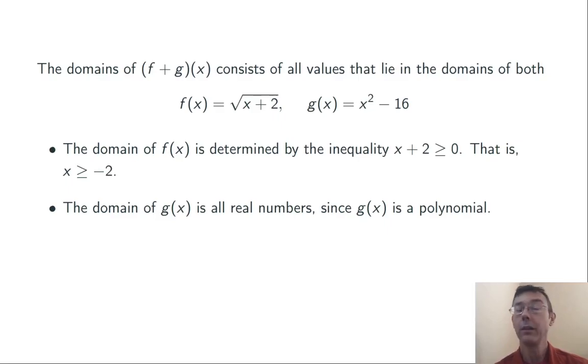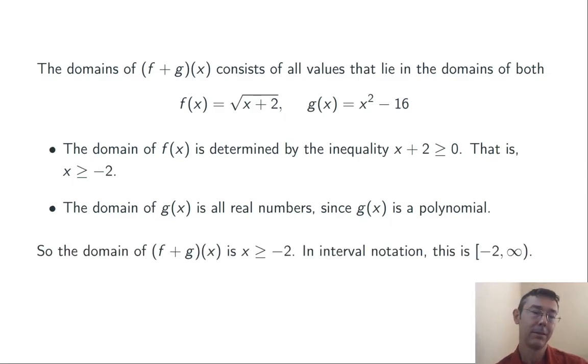The domain of g is going to be all real numbers. When g of x is just a polynomial, there are no values we can't plug in. Overall, the domain of f plus g of x is going to be the intersection of those two, and that's just x greater than or equal to negative 2. That's the set of all values that can be plugged into both f and g. In interval notation, that's a closed bracket, negative 2, comma, infinity, open parenthesis.